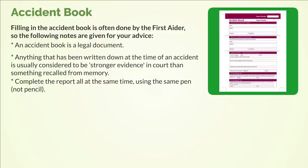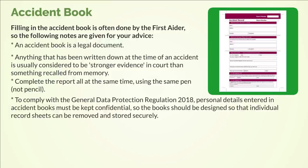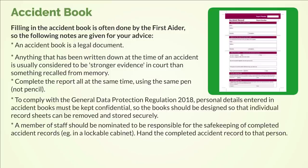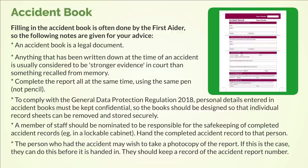Complete the report all at the same time, using the same pen, not pencil. To comply with the General Data Protection Regulation 2018, personal details entered in accident books must be kept confidential, so the book should be designed so that individual record sheets can be removed and stored securely. A member of staff should be nominated to be responsible for the safekeeping of completed accident records, for example in a lockable cabinet. Hand the completed accident record to that person. The person who had the accident may wish to take a photocopy of the report before it is handed in. They should keep a record of the accident report number.